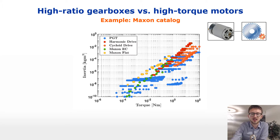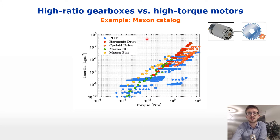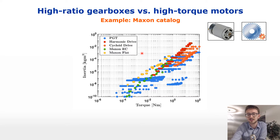On this graph, I'm going to take my laser pointer now. We have some point clouds corresponding to several different types of motors and gearboxes: planetary gear trains, harmonic drives, and cycloid drives, as well as the Maxon EC and Maxon flat motors. Planetary gear trains are probably also Maxon brand — you can read about it in the paper; I didn't check it for this specific video.